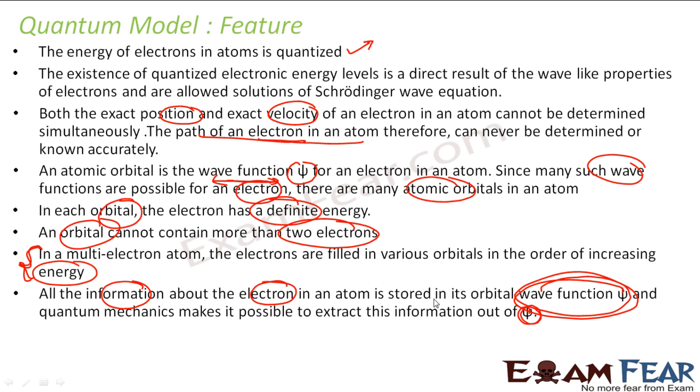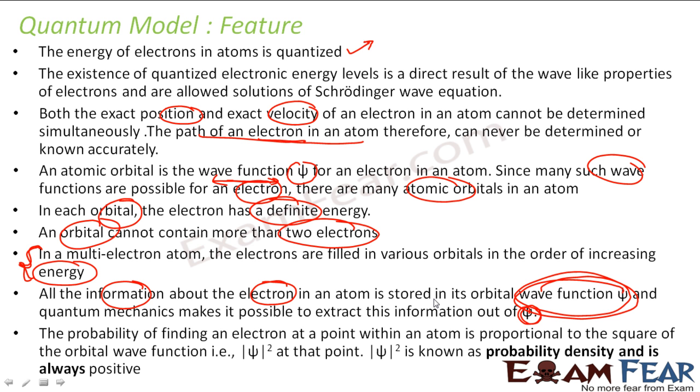The probability of finding electron at a point within an atom is proportional to the square of the wave function. Please note, this psi square is known as probability density. It's always positive because square of number is always positive. This guy gives the method to find the probability density of an electron.